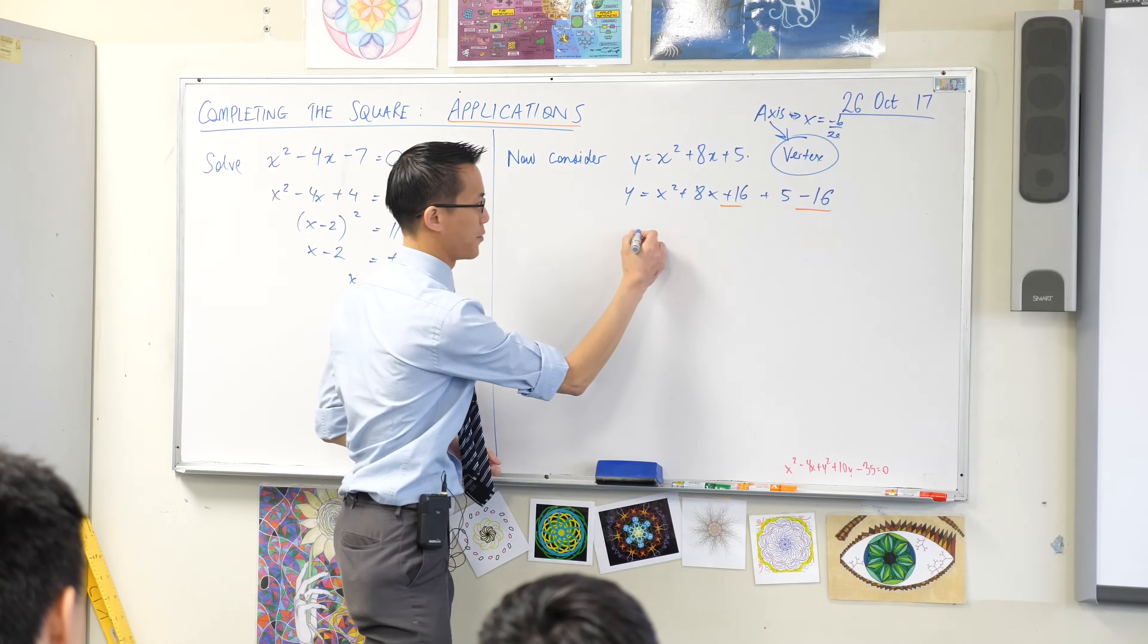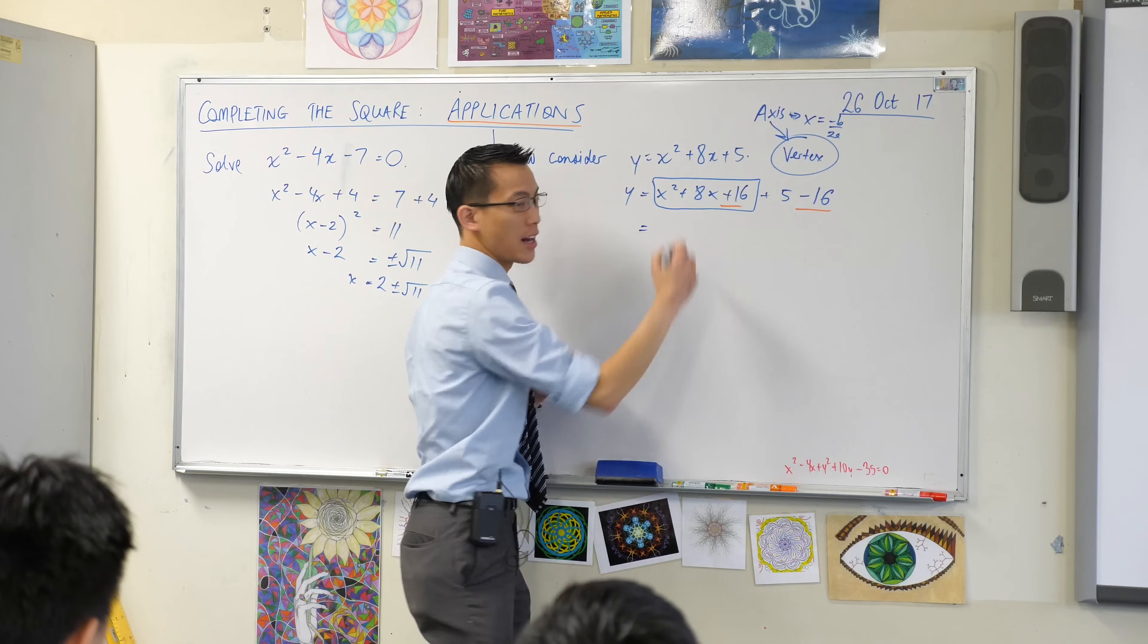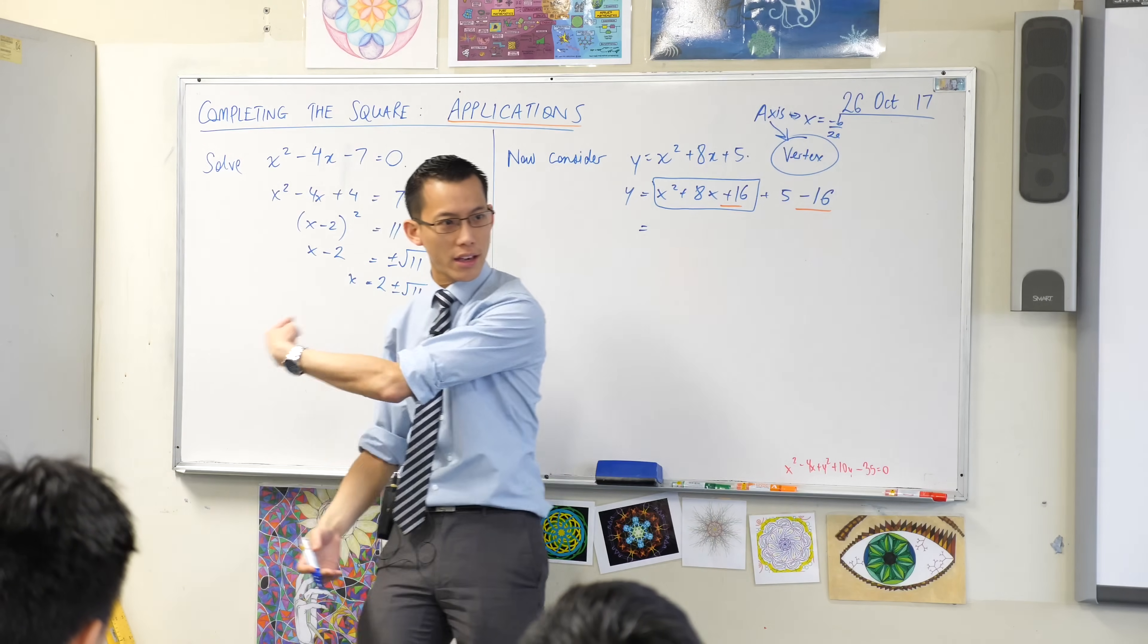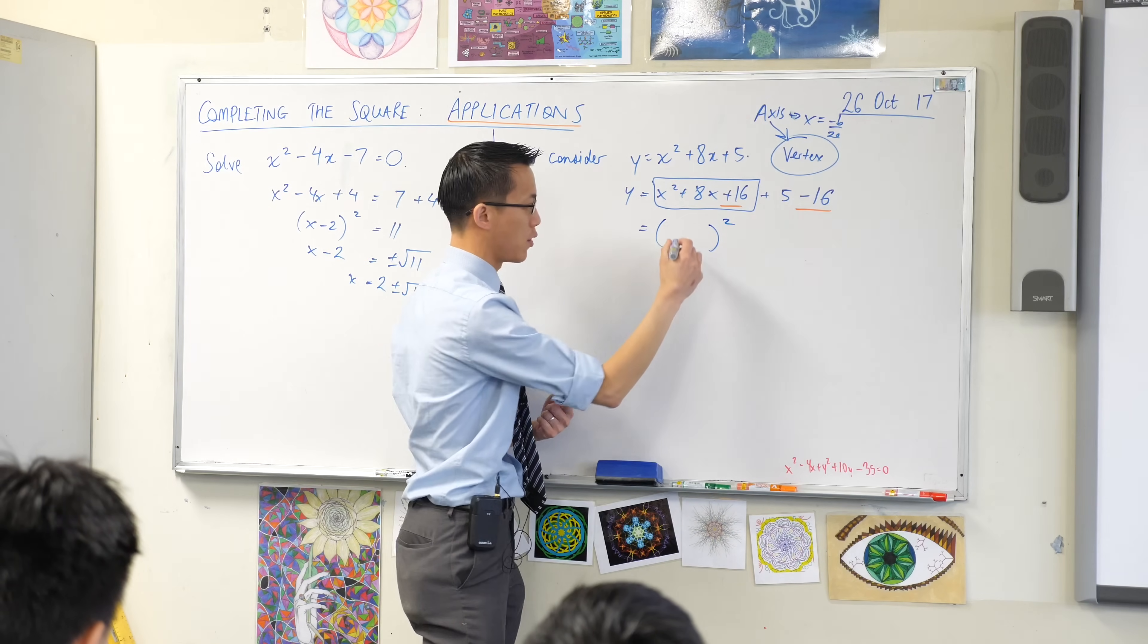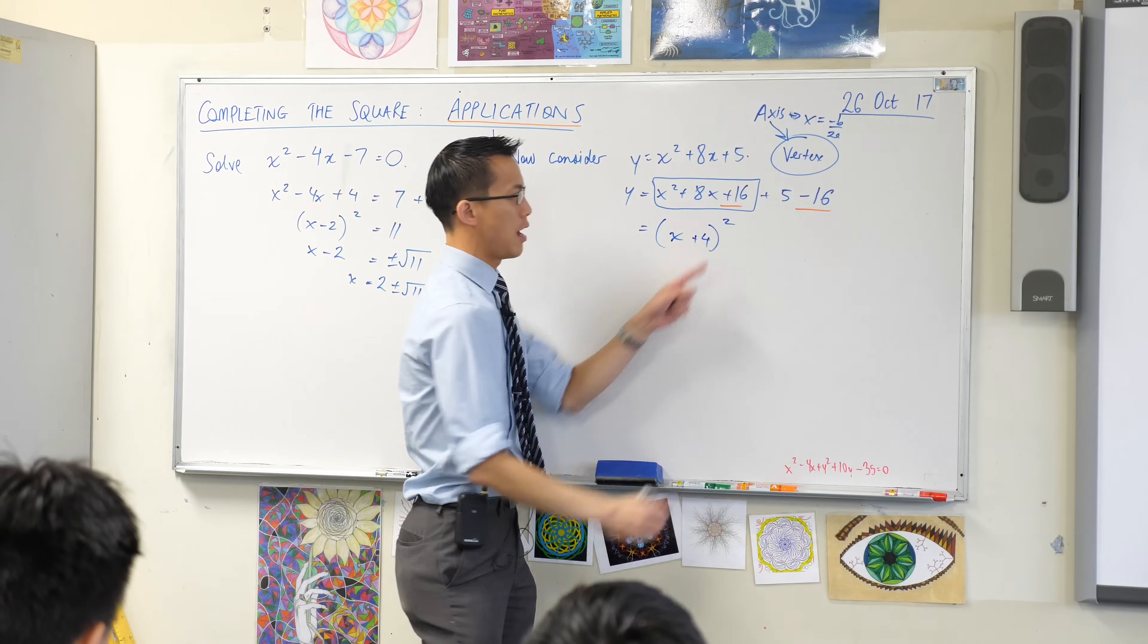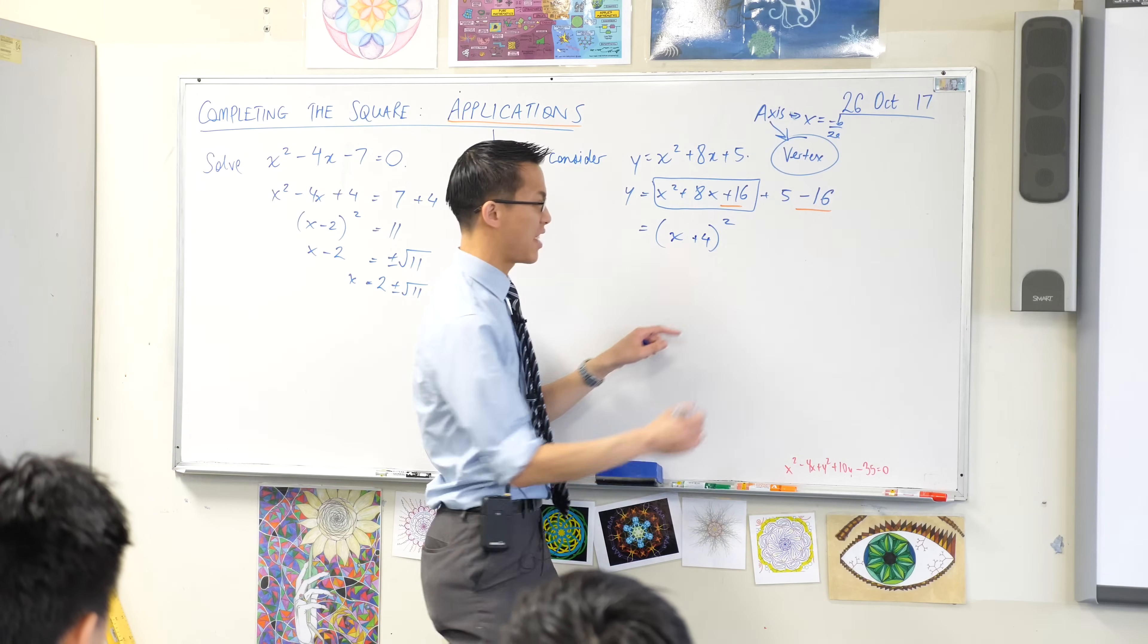Watch. So, what I've now created, this little set of terms here, this is a square, right? Just like over here, what is a square? It's x plus 4. It's x plus 4, very good, x plus 4. We can collect some like terms over here. This is going to be minus 11.